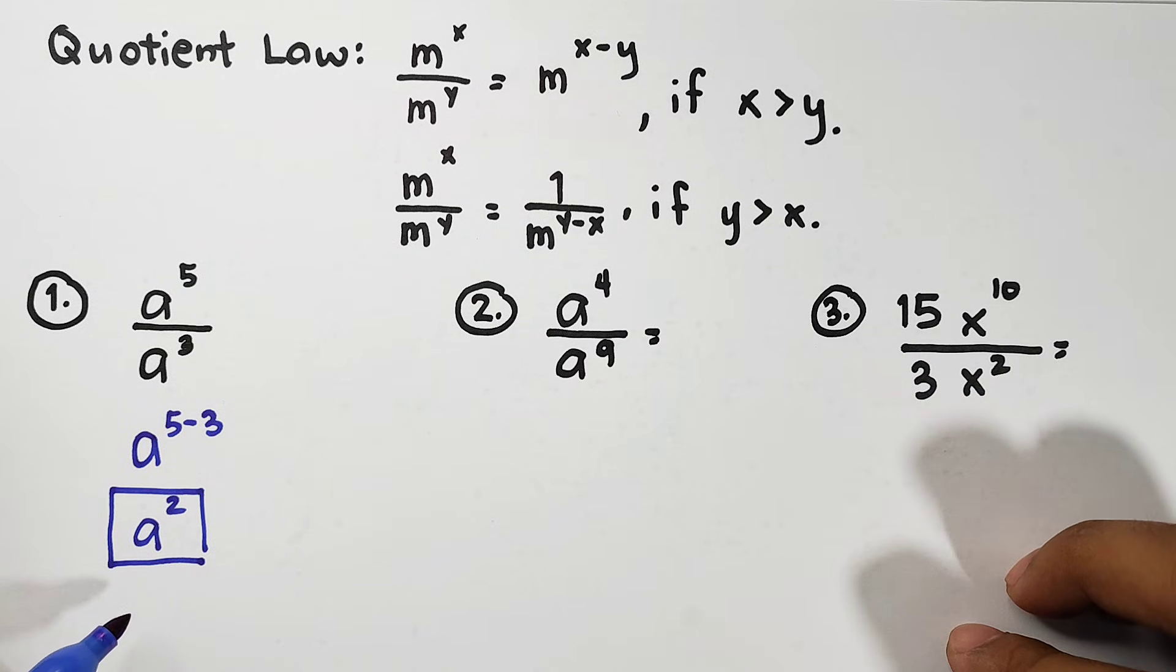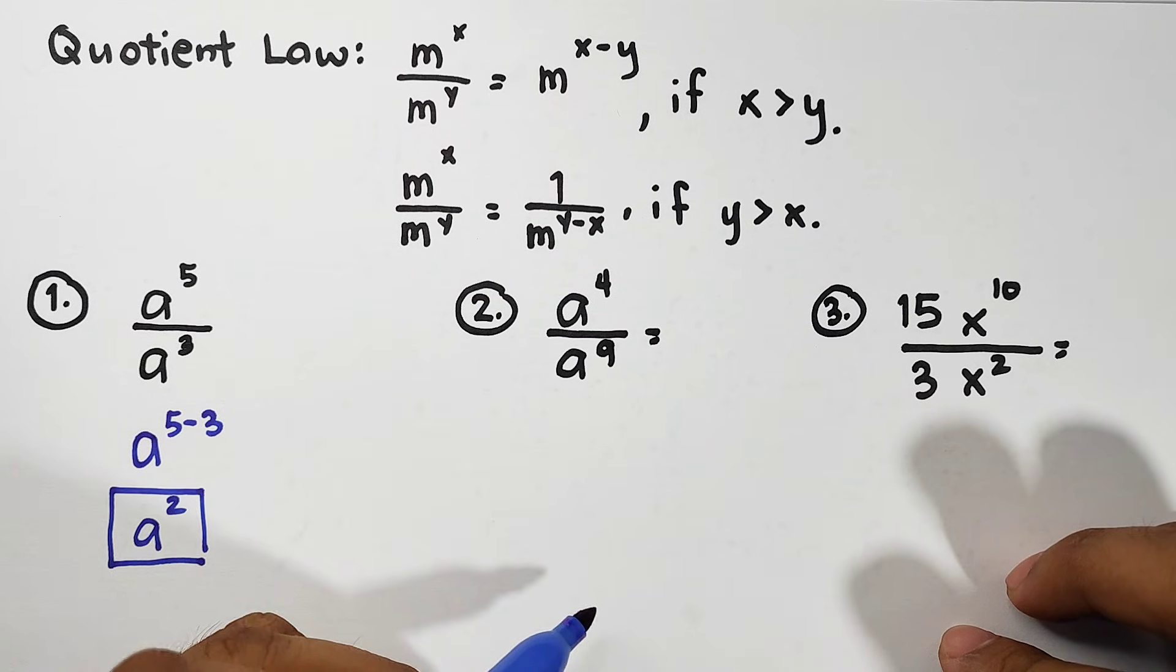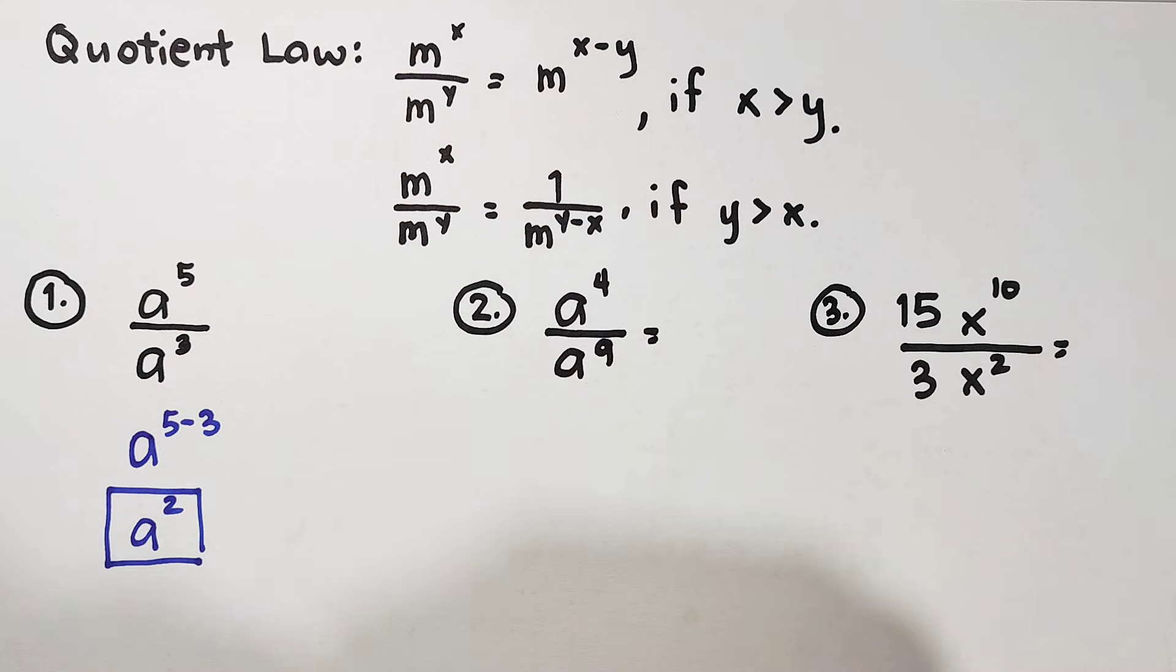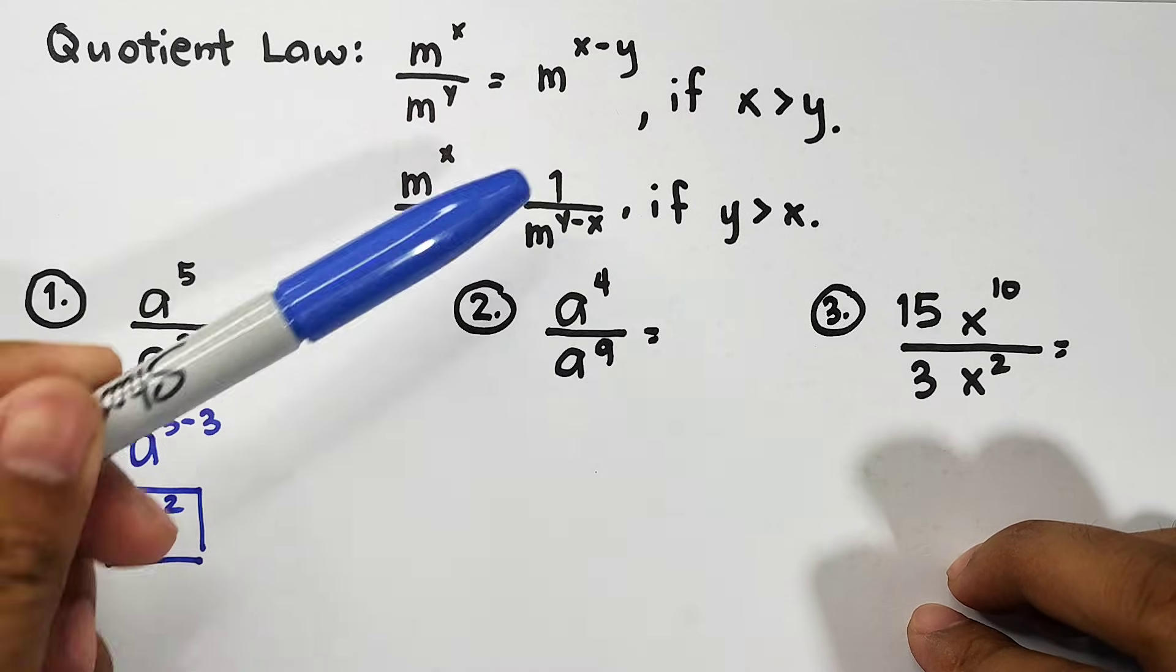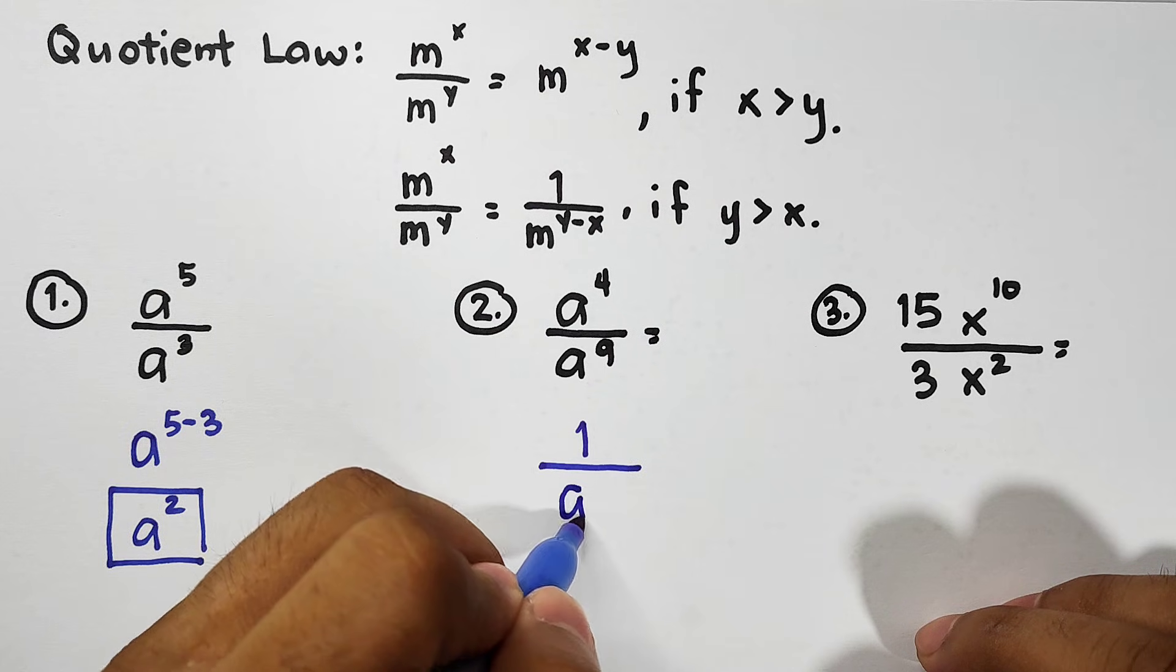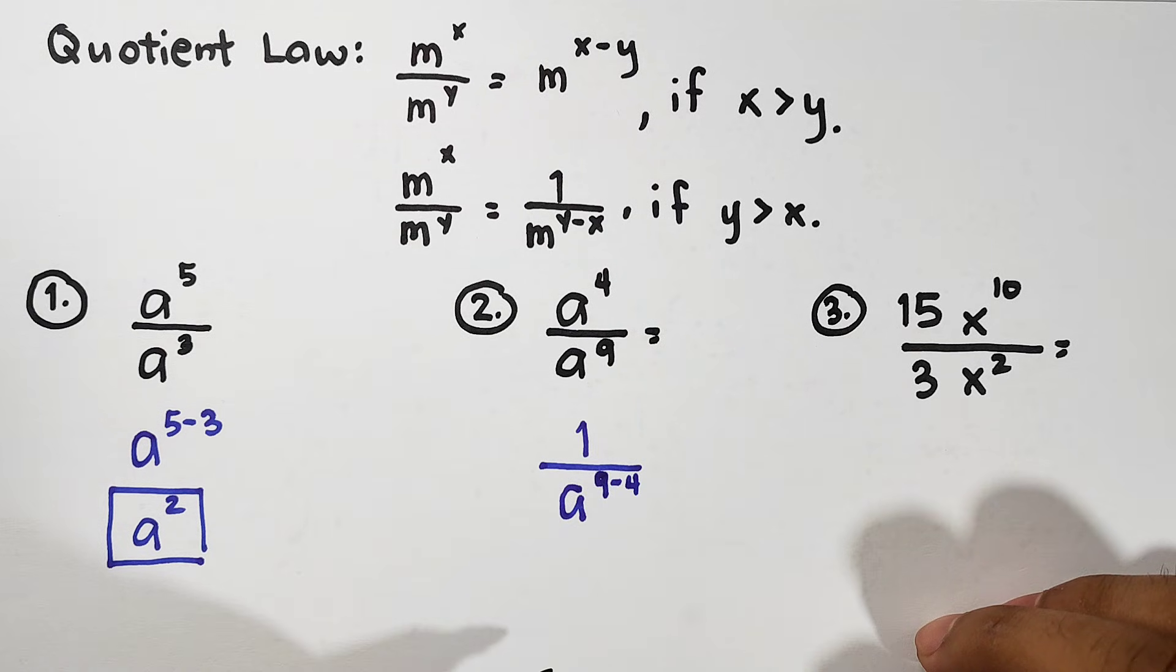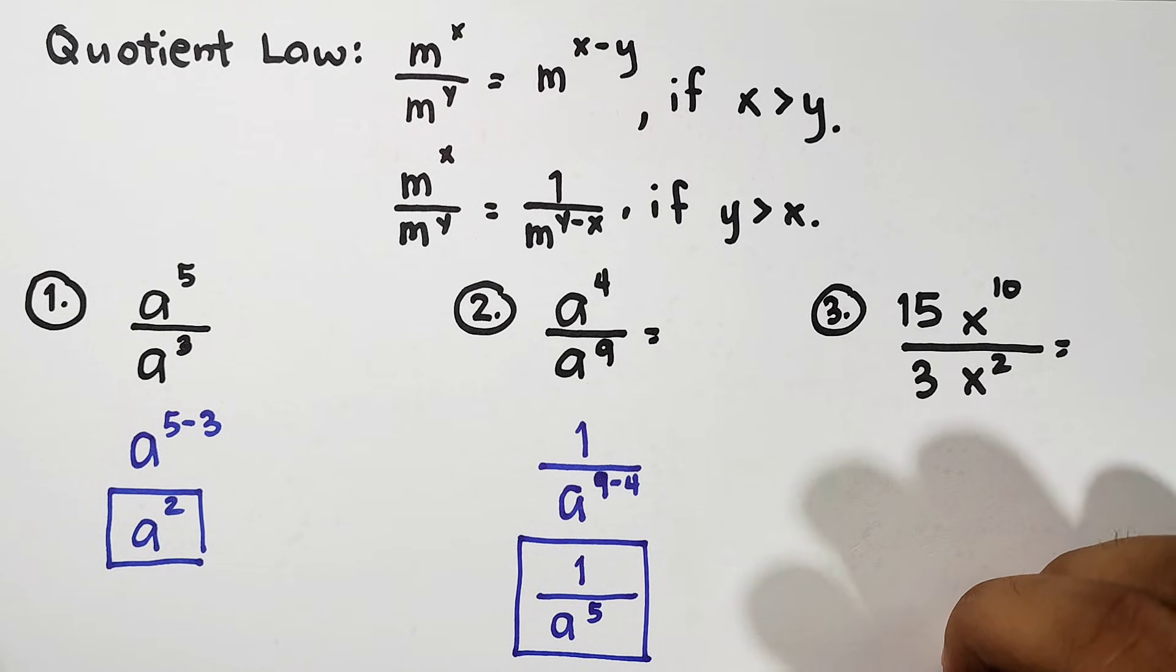Next, let's move on with item number 2. For number 2, we have a to the 4th power over a raised to 9. Let's compare the exponents. Here, let me get the cap of this marker first. Here, the exponent of the denominator is greater than the exponent of the numerator. Again, we're talking about the same base. Now, this will be the format. Okay? It will be a fraction. Let's try. That is 1 over copy the variable. That is a subtract exponents. Let's start with the exponent of the denominator. That is 9 minus 4. So, simplifying this, that is 1 over a raised to 9 minus 4, which is 5. And this is now the simplified form of number 2. Okay, guys?